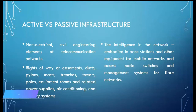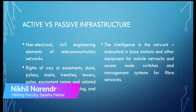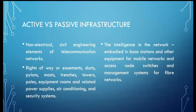Active equipment essentially means the active components of the network which are used for transmitting information — like your antennas, nodes, and switches. These are the intelligent components of the network. Then there is a passive element, which involves civil engineering: the rights of way, the ducts, the towers, etc. — these are passive.